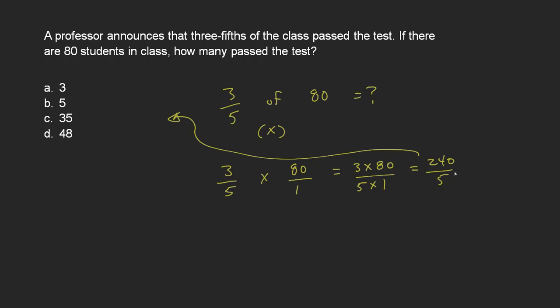Now there's not many things that will go into both 240 and five at the same time. But five is probably the easiest one to try. So let's see how many times five goes into five. That's one time. How many times does five go into 240?